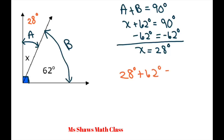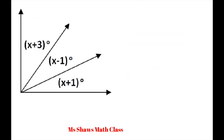Our angle A is 28 degrees. You can check your solution: 28 degrees plus 62 degrees equals 90 degrees. Now we have a more complicated one — we have three angles, but it is going to be a right angle, so we're going to add all these up.